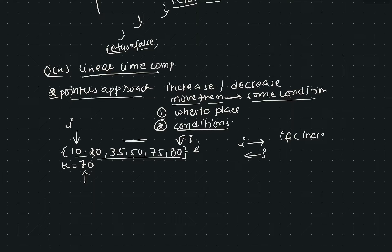Now let's write the pseudocode. We set int i to position 0 and int j to position n minus 1, where n is the length of the array. We run a while loop while i is less than j. Inside, if a[i] plus a[j] equals k, we return true. Else if a[i] plus a[j] is greater than k, we need to decrease the sum so we do j minus minus. Otherwise we do i plus plus.